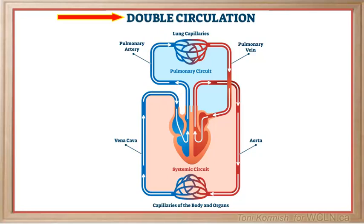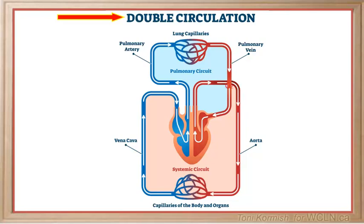Remembering that the function of veins is to carry blood back to the heart, the pulmonary veins carry the freshly oxygenated blood to the left atrium. The left atrium contracts to force the freshly oxygenated blood into the left ventricle. The left ventricle then contracts to force the blood into the aorta, which delivers the freshly oxygenated blood to all the tissues of the body.